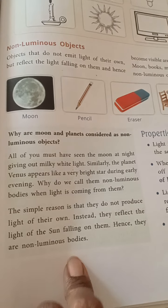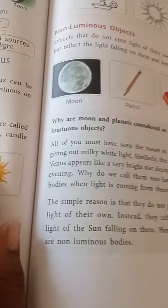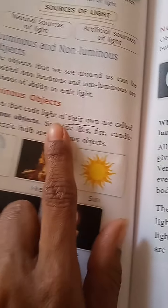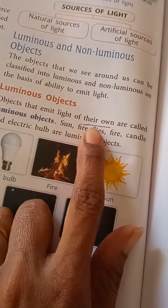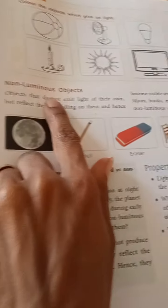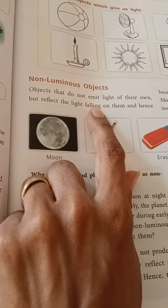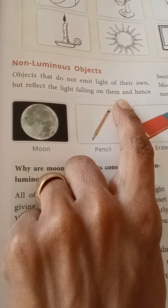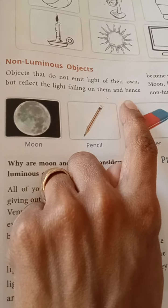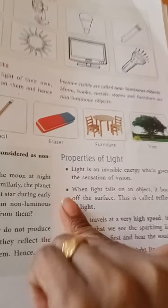Do you understand luminous and non-luminous? Luminous objects emit the light of their own. So next, properties of light.